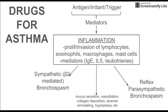There's also reflex parasympathetic bronchospasm. It's not really understood how this works, but the bronchospasm causes the muscles around the airways to constrict and tighten, making symptoms worse. We're going to talk about how different drugs interfere with different parts of this pathway.